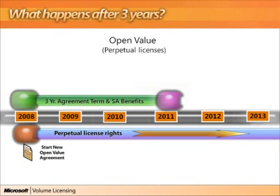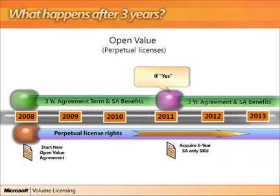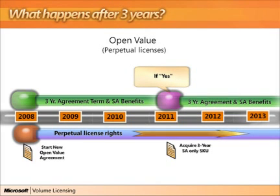Now at the end of three years, they have the option to renew their Software Assurance or not. In this first example, let's say they choose to renew. Through Open Value perpetual, they would simply renew the Software Assurance component, because they've already acquired the licenses in the first three years — they don't need to buy the license again. By doing so, they will have an additional three years of Software Assurance benefits.